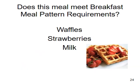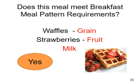Does this planned menu have the required components? Waffles, strawberries, and milk. Yes — the waffle credits as a grain, the strawberries as a fruit, and a carton of milk. In this example, to make the quantity sufficient, I would need to make sure the waffle was large enough to credit as one grain or more, and would serve one cup of strawberries along with the carton of milk.